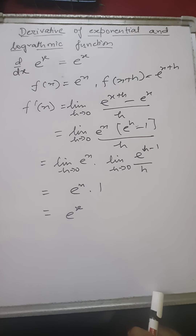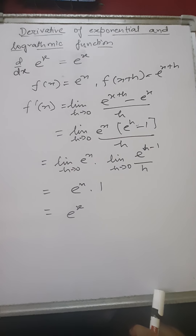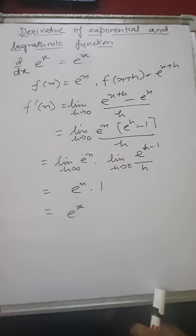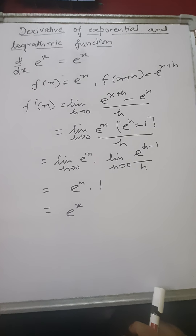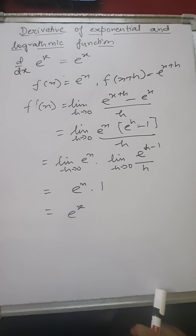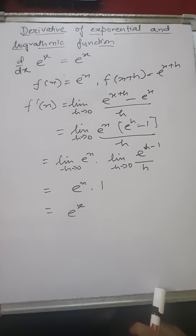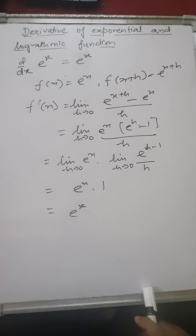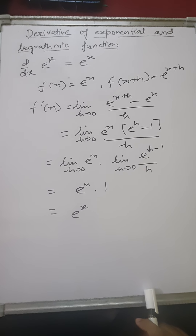Children, today we are going to find the derivative of exponential and logarithmic functions. The formula for differentiating an exponential function is: d by dx of e to the power x equals e to the power x.